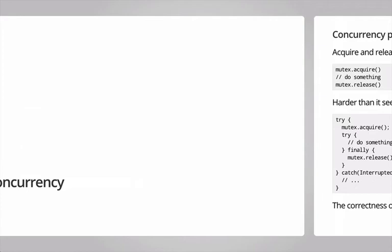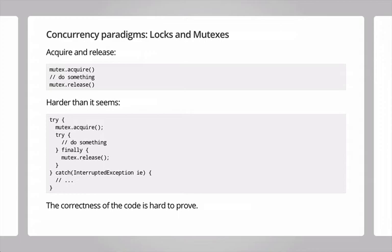Now for the second part — concurrency, which is the coolest part in my opinion. Has anyone read 'Seven Concurrency Models in Seven Weeks'? It's a very hard but really good book. It presents many different ways of doing concurrency. I'm going to present three of them today: two you know well, and a third one — the one Go uses — that not everyone knows. The first is locks and mutexes.